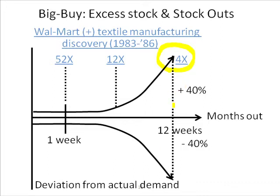So in theory, if a distributor could buy more frequently, it's not just about landed costs. I don't want to get the absolute lowest landed cost, but sometimes it might be worth paying a slightly higher landed cost if the turns go up even more than the margin goes down. And more importantly, the excess stock and stockout problems diminish dramatically too.